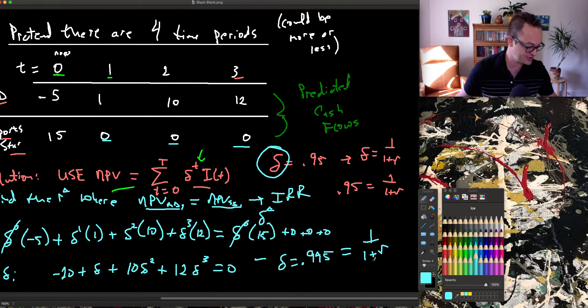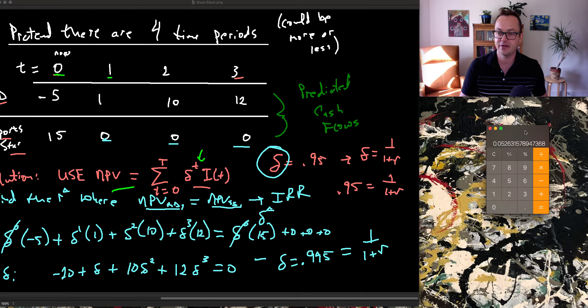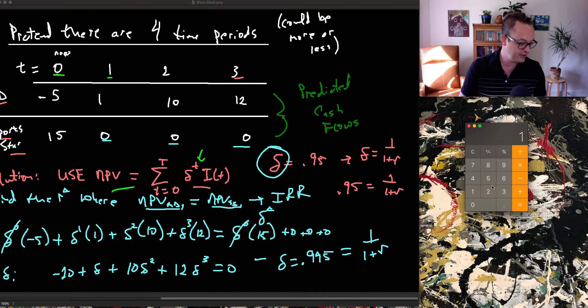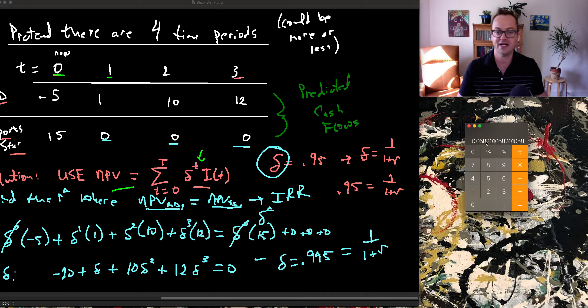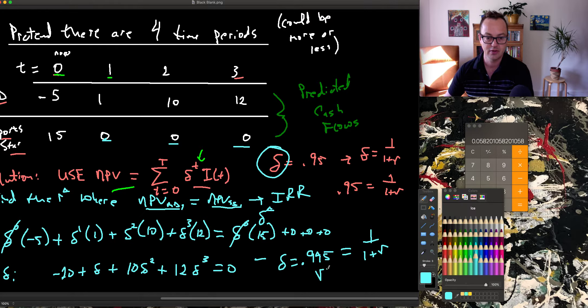Again, I can just substitute this in and bring over my calculator. 1 divided by 0.945 minus 1. 1 divided by 0.58, so r star is equal to 5.8%.